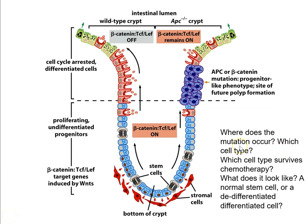When thinking about a cancer stem cell population we need to consider how and where the tumour develops. A useful model is the intestinal crypt in APC-null mice. APC — adenomatous polyposis coli — is part of the Wnt signalling pathway, and knockout of the APC gene results in constitutive Wnt signalling in cells within the intestinal crypt.